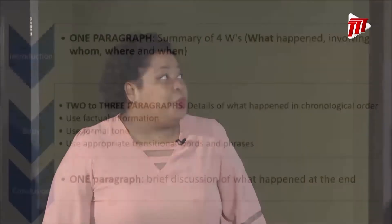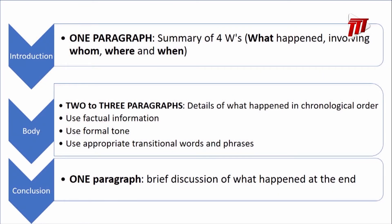In paragraph one, you are going to summarize the four Ws: what happened, involving whom, where, and when. Then you are going to write two or three paragraphs giving details of what happened in chronological order. Of course, you must use factual information, you must have a formal tone, and we must use appropriate transitional words and phrases. In your final paragraph, give a brief discussion about what happened at the end. Just five paragraphs for an A-plus report.